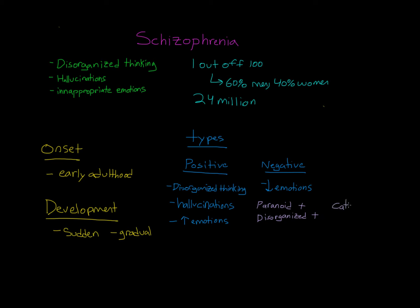We also have catatonic schizophrenia, which is a type of negative schizophrenia. This includes not moving for hours, extreme slowness, and other interesting behaviors — people with this type are known to parrot the speech of others, passively repeating everything they say. And then last, we have what's known as undifferentiated, the term used to describe clusters of symptoms that don't necessarily fall within these clean categories. People with this diagnosis will show a variety of symptoms, both positive and negative.